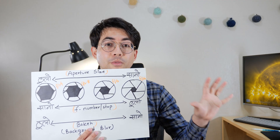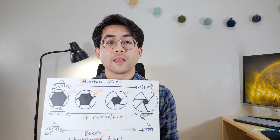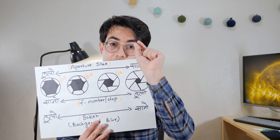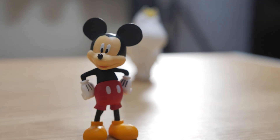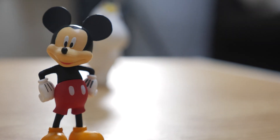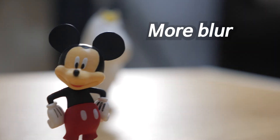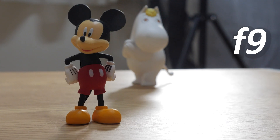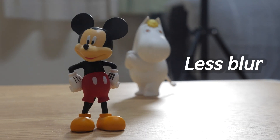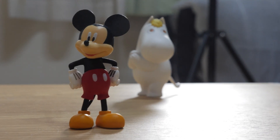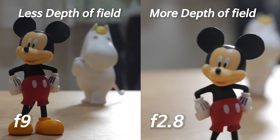Now we can see the aperture in action. I have a GH5 camera. At aperture 2.8, the image is clear and the background is blurred. You can see the face is sharp. When the aperture gets smaller, the background blur decreases and more of the scene comes into focus.